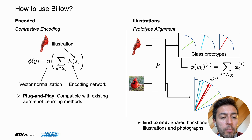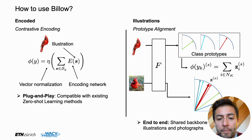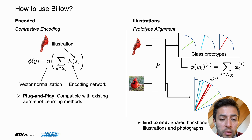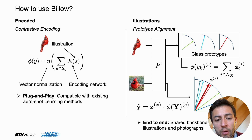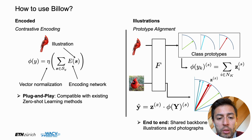We also propose a more optimized approach called prototype alignment. Using the same encoding network, we feed both the illustrations and real photographs. From the illustrations, we compute class prototypes by normalizing all samples per class into an embedding. At inference time, we compare how similar the real image embedding is to the learned class prototype using cosine distance. This is much more powerful because it learns end-to-end and produces a joint embedding space shared by both illustrations and photographs.